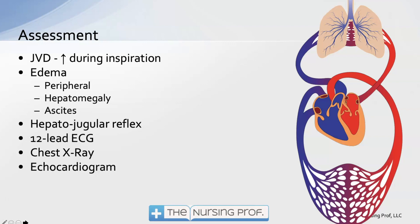We also look for peripheral edema, ascites, and hepatomegaly. The hepatojugular reflex is another way of assessing fluid volume — we press on the liver and watch the jugular veins to see if they fill excessively. A 12-lead EKG, chest x-ray, and echocardiogram can all give us information about the right side of the heart and how well it is functioning.